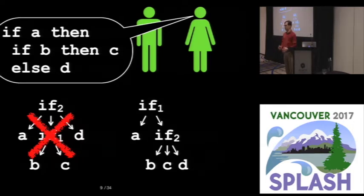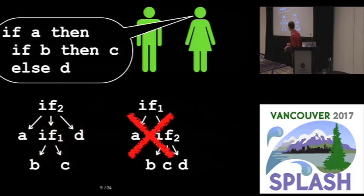Now Todd doesn't know what shifts and reduces are. His eyes kind of glaze over at that point. But he asks her, okay, but what if I wanted to reject the right-hand tree instead of the left-hand tree?